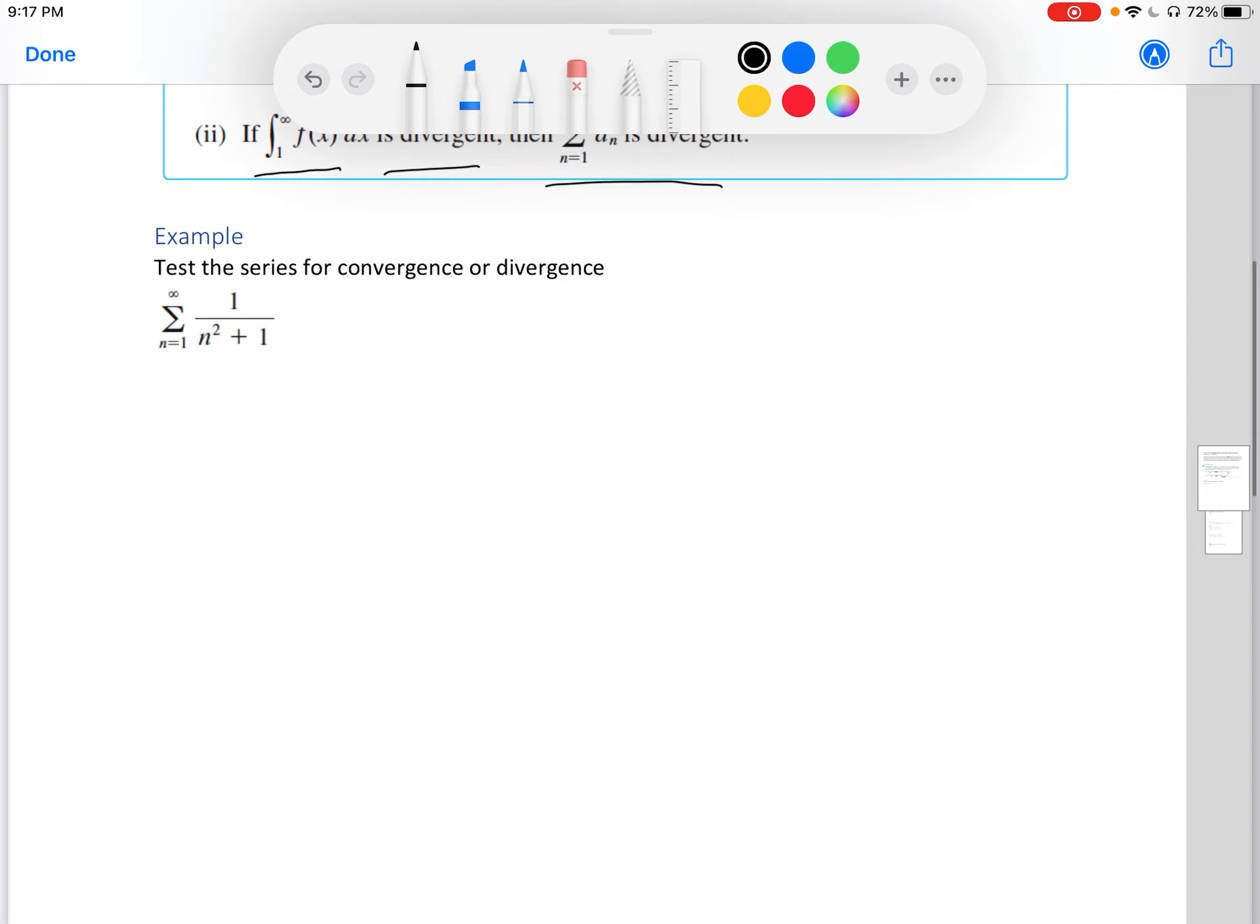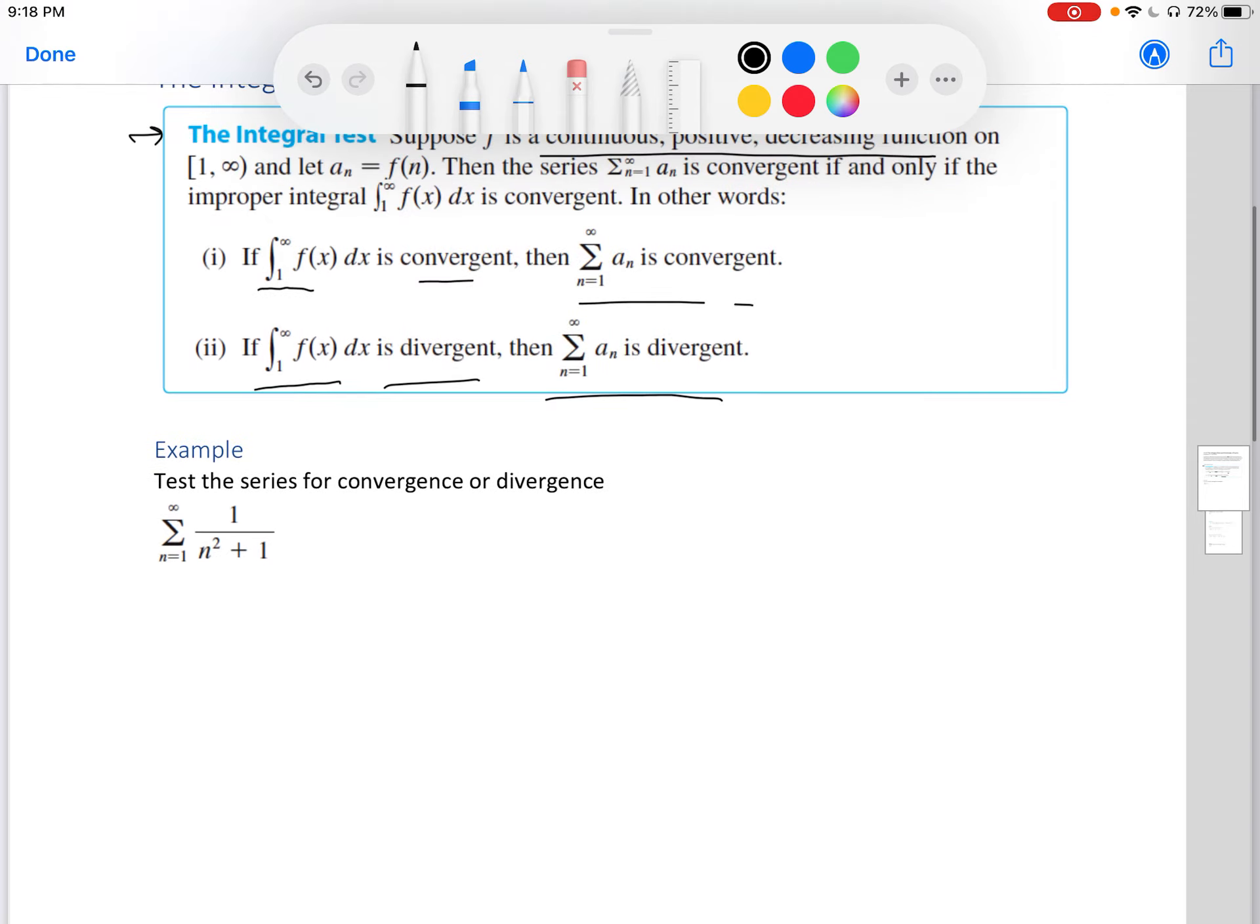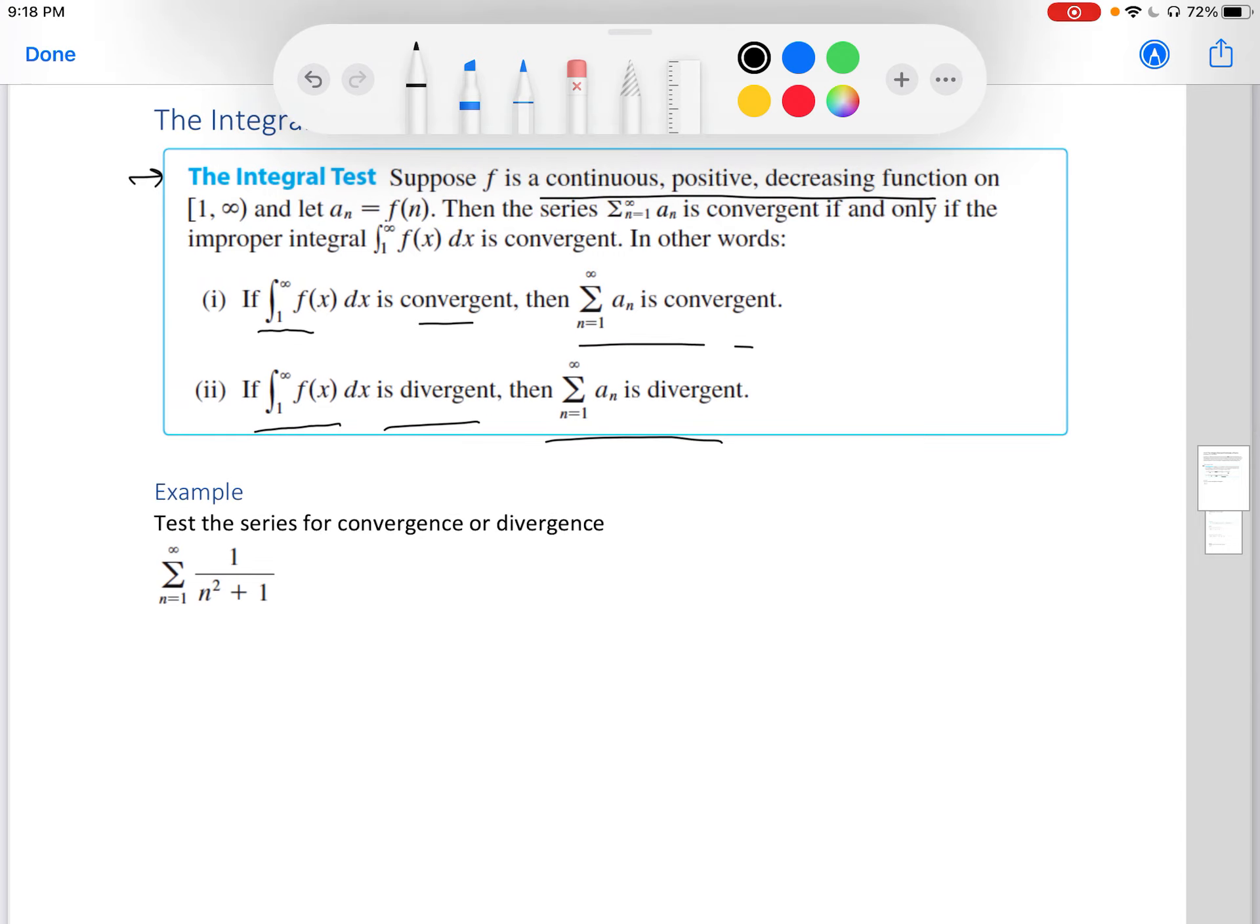Let's do an example. For this one, we're going to apply the integral test. We have to change this to a function - we change our variable from an n to an x. So we have our limit as t approaches infinity of the integral from 1 to t of 1 over x squared plus 1 dx.